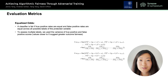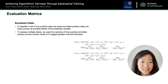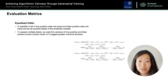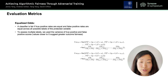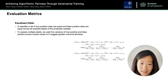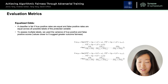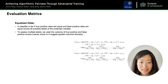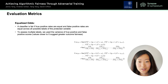To evaluate the fairness of our models, we use the statistical definition of equalized odds, which states that a classifier is fair if true positive rates are equal and false positive rates are equal across all possible labels of the protective variable. Since we're using multi-class variables for Z, we use the variance of true positive and false positive scores to determine fairness. Values closer to zero suggest greater fairness.